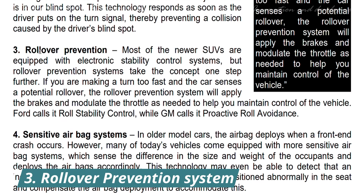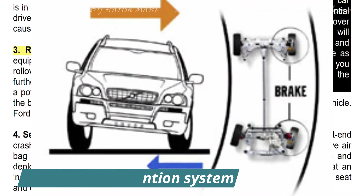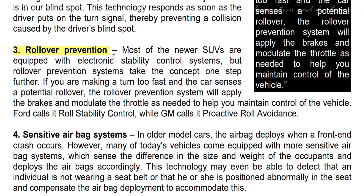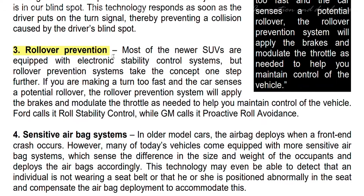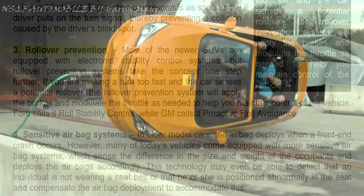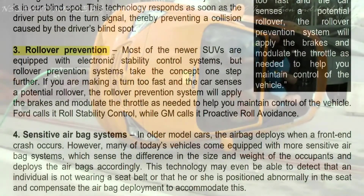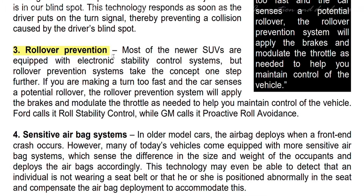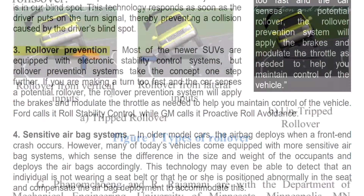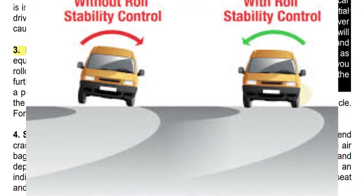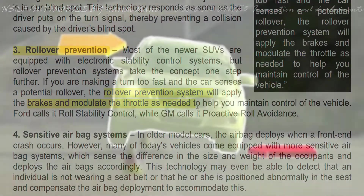The third innovation is rollover prevention. We have to control the vehicle using electronic stability systems. When we turn the vehicle and it starts to roll, the rollover prevention system engages to stop the vehicle from rolling over.